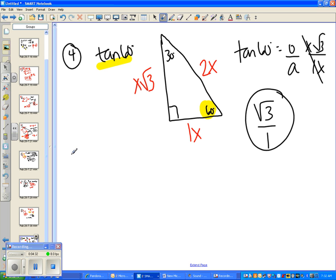Number 5, it said use the trig ratio to write cosine x as a fraction. The triangle was like this, and here was x. The hypotenuse was 15, the opposite side was 9, and the adjacent side was 12.